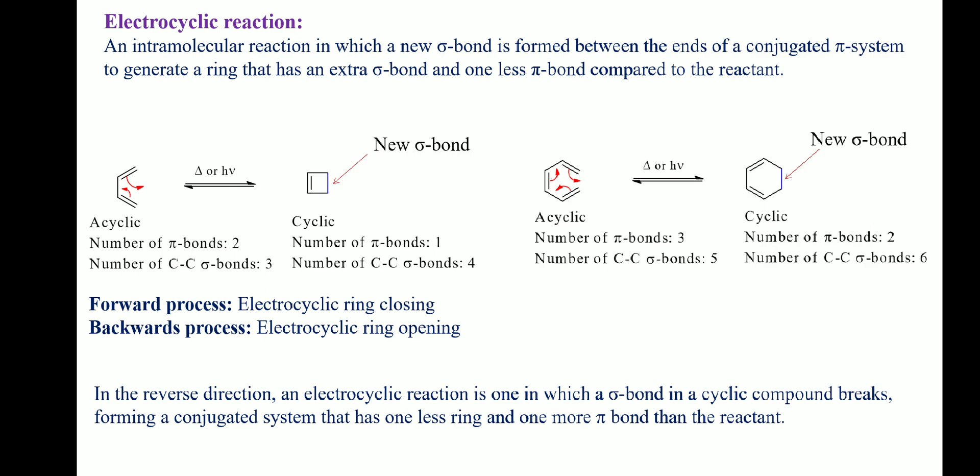Typical examples are conversion of 1,3-butadiene to cyclobutene and 1,3,5-hexatriene to 1,3-cyclohexadiene. Before going into details of electrocyclic reactions, we need to learn how to construct Huckel molecular orbital diagrams of different pi electron systems and the different terminologies used in electrocyclic reactions.